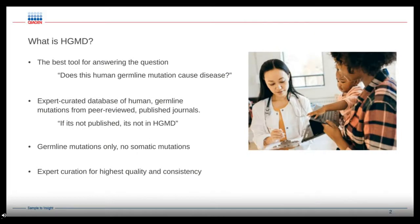What is HGMD? A good way of answering that question is the statement: does this human germline mutation cause disease? If that's the sort of question you're interested in answering, then HGMD is a very good place to go. This database is an expert curated database of human germline mutations. All of these mutations come from peer-reviewed published journals. We have a saying at QIAGEN that if it's not published, it's not in HGMD.